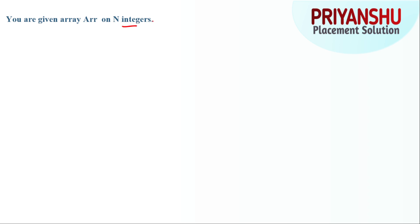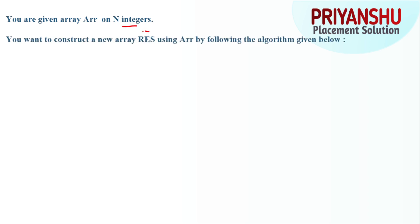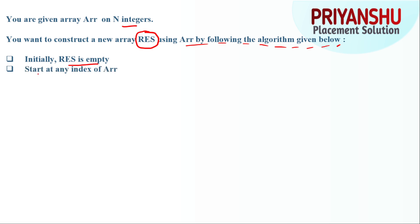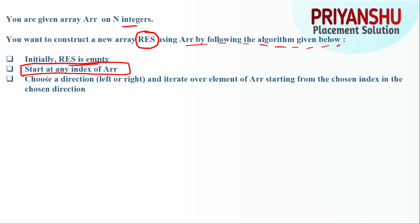Let us start without wasting time. You are given an array `arr` of integers. You need to construct a new array `res` using `arr` by following a given algorithm. There are four conditions. First, `res` is initially empty. Next, you start at any index — keep this point in mind, it is very important and confusing. You then choose a direction, left or right, and alternately iterate over elements of `arr` starting from the chosen index in the chosen direction.